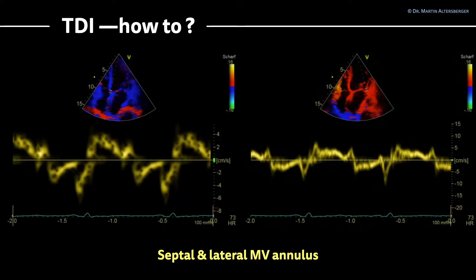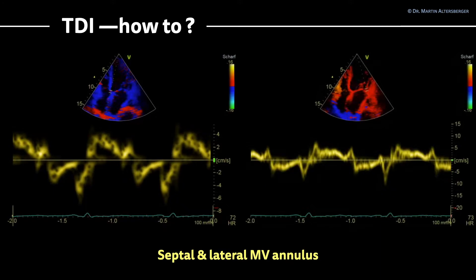You have two positions where you place the pulsed wave Doppler for TDI: the septal and the lateral mitral valve annulus. On the left-hand side you see the septal mitral valve annulus — there are two waves downwards, the E prime and the A prime, while the movement towards the apex is the S prime. We focus on the E prime. At the septal annulus, the E prime is the smaller wave, below 6 to 7 cm/s. At the lateral mitral valve annulus, the E prime is also clearly reduced, not above 10 cm/s — indicating reduced TDI at both annular positions.